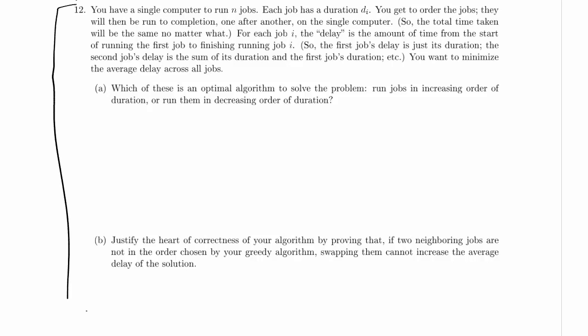We're working on part 12, A and B, of problem 3 on the practice exam. So you have a single computer to run n jobs. Each job has a duration di. You get to order the jobs. They will then be run to completion one after another on the single computer.